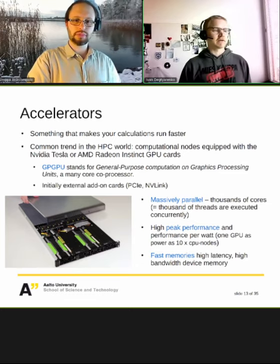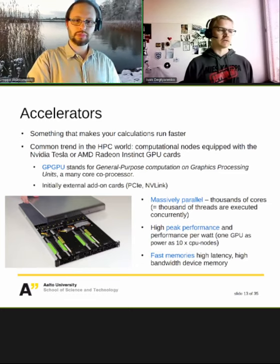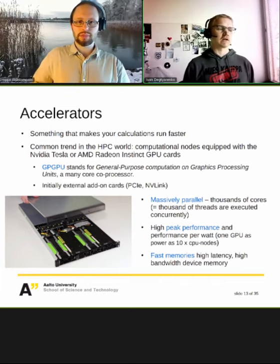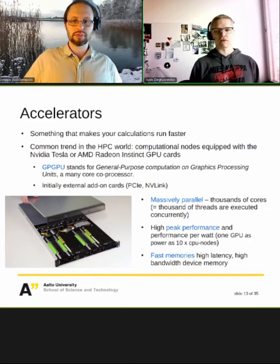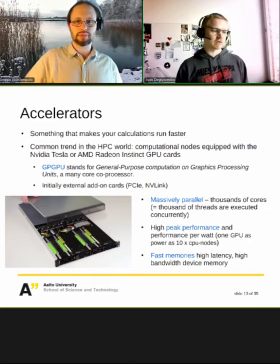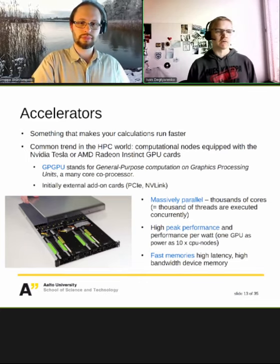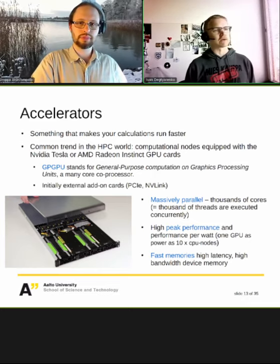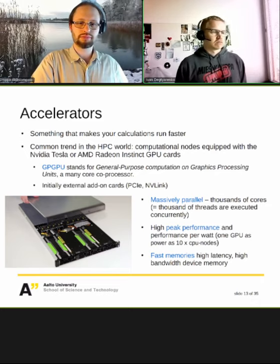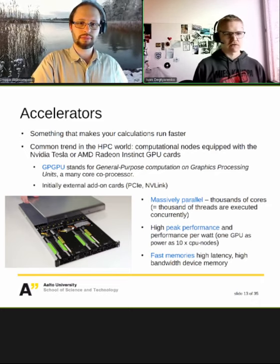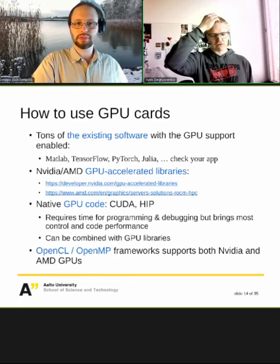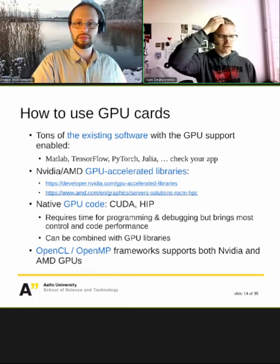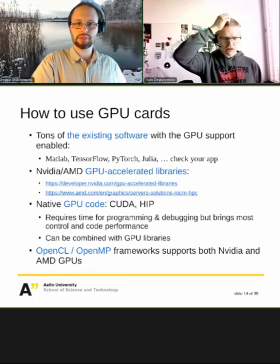A single modern Nvidia GPU card can be 10 times faster than a normal compute node. However, one Nvidia A100 card, even with university discounts, still costs around 7,000–10,000 euros. To use GPU cards, you can look for software already ready to run on GPU — pre-installed in the cluster repository — or compile and run it yourself.